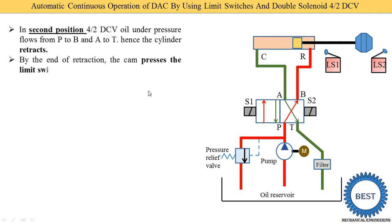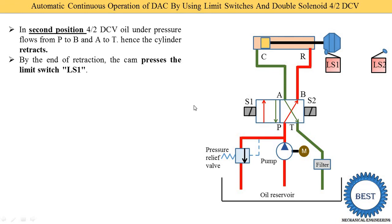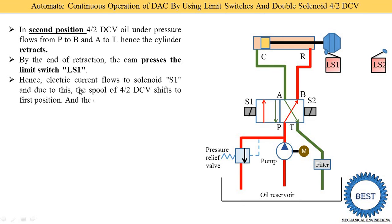By the end of retraction, the cam presses limit switch LS1. When retraction is over, the cam comes into contact with LS1 and actuates it. LS1 supplies current to solenoid S1, which shifts the spool of the 4 by 2 DCV back to the first position, and the cycle continues.